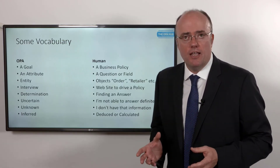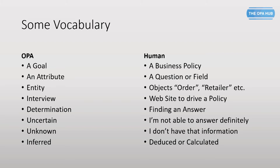This is a reference slide you can use later — slides are downloadable at the end of the module — providing a vocabulary mapping. If you come from traditional CRM, ERP, or database-related technologies, key terms are listed: goal, attribute, interview, and others. Some we've already discussed; others will be populated in upcoming chapters, so you don't need to pay close attention to all of them right now.